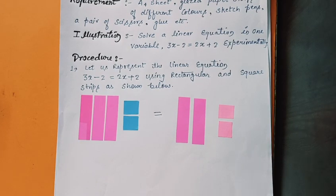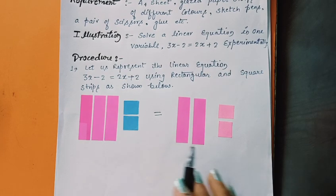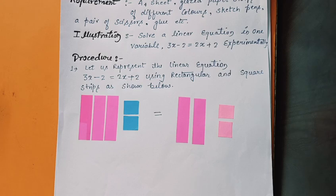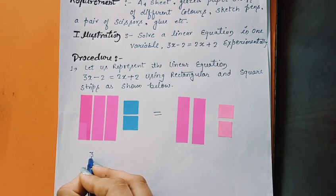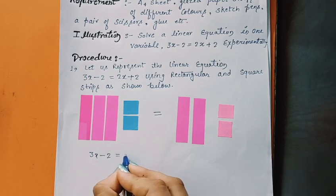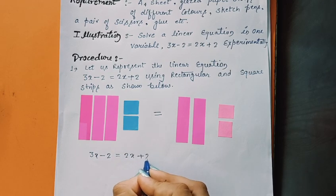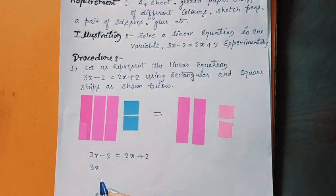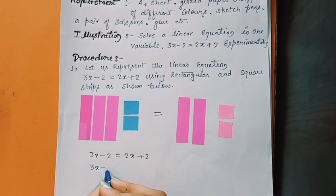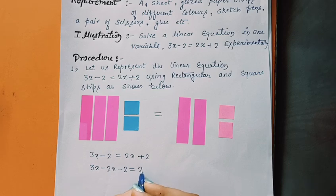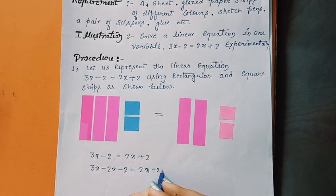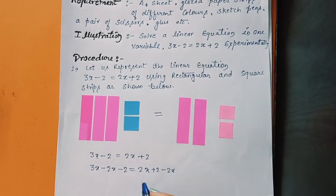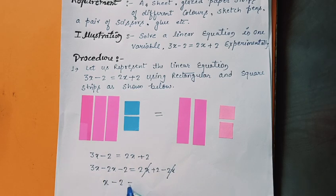Now in second step, we subtract or remove the 2 pink color from both sides. The mathematical representation of this: 3x minus 2 is equal to 2x plus 2, so we remove 2x, this 2 rectangular pieces of paper on both sides. So 2x plus 2 minus 2x, this cancels out. And here x is left, minus 2 is equal to 2.